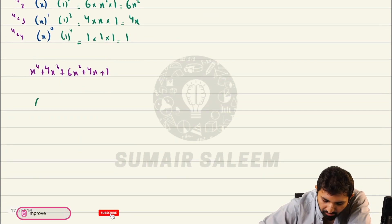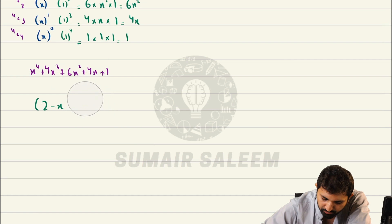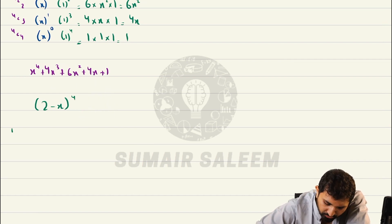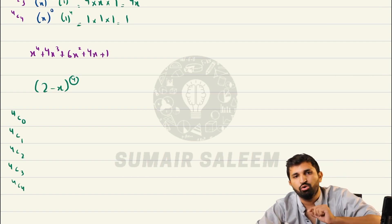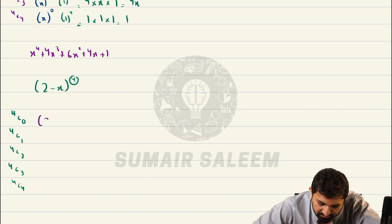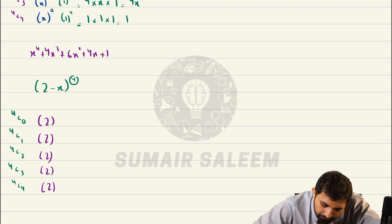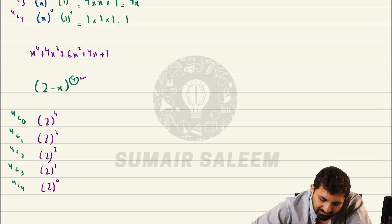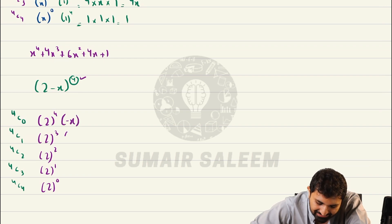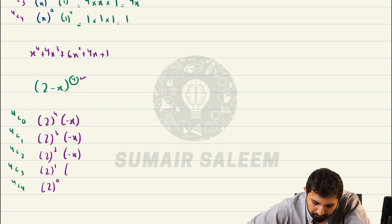The next example is 2 minus x to the power 4. Since n is 4, write: 4C0, 4C1, 4C2, 4C3, 4C4. The first term is 2, with backward counting for powers: 4, 3, 2, 1, 0. The second term is minus x, with forward counting for powers: 0, 1, 2, 3, 4.